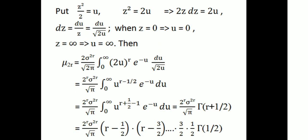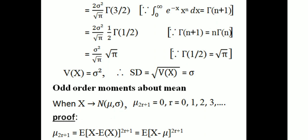So μ₂ᵣ equals 2ʳ times σ²ʳ divided by √π times Γ(r + 1/2). Using the property of the gamma function Γ(n+1) = n·Γ(n), we expand: Γ(r + 1/2) equals (r − 1/2)(r − 3/2)⋯(3/2)(1/2)·Γ(1/2), where Γ(1/2) equals √π.